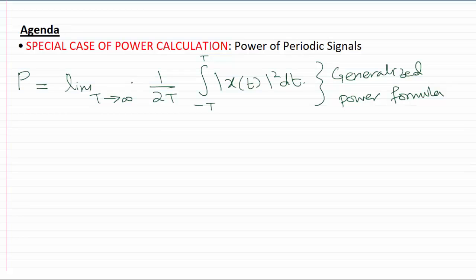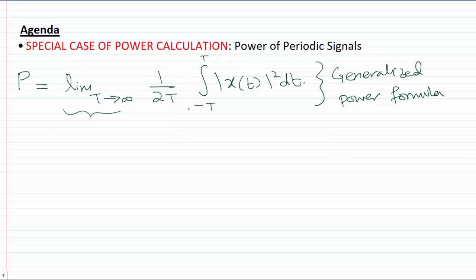In this video we're going to talk about calculating the power of a special type of signals called periodic signals. Remember that the power of any general signal can be computed using this formula, where you have to take the window length as large as possible, then find the energy in a window and divide by the window width. When we know the signal is periodic, there is no need to take the window as large as possible — we can take a window of size equal to the period of that periodic signal.